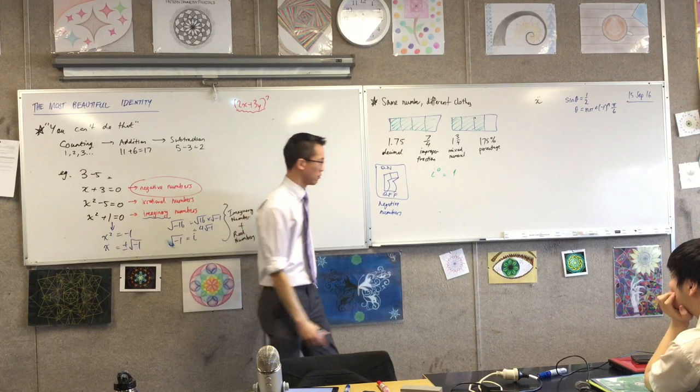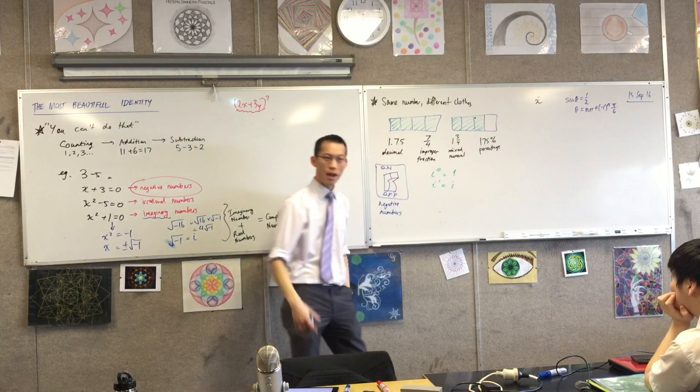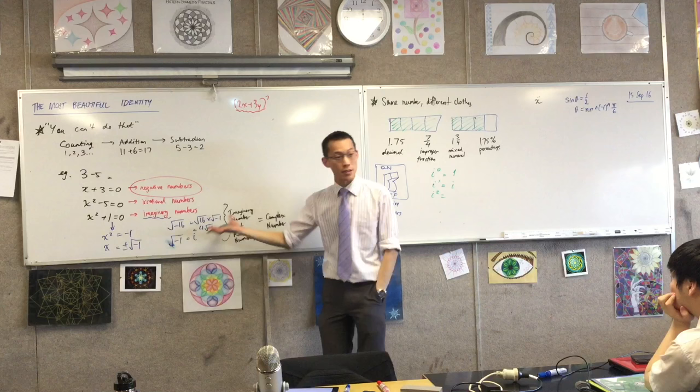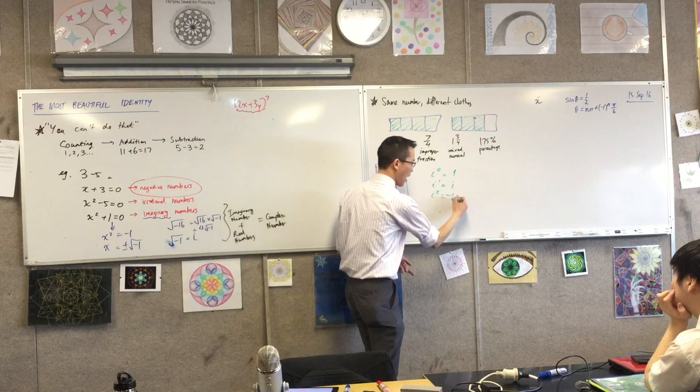Okay, well what if I just do one of them? Well that's a bit boring, it's just, it's i. Now it starts to get a little more interesting. If I square i, based on what I've defined i to be, i squared is negative one, right? Because i is after all the square root of negative one, you square it, negative one returns.